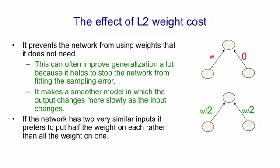If the two inputs are very similar, those two networks will produce very similar outputs, but the one with the halved weights will have much less extreme changes in its output when you change the inputs.